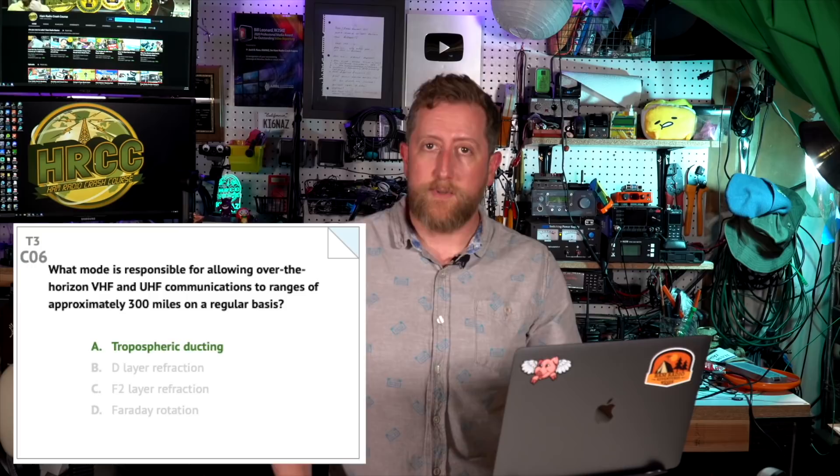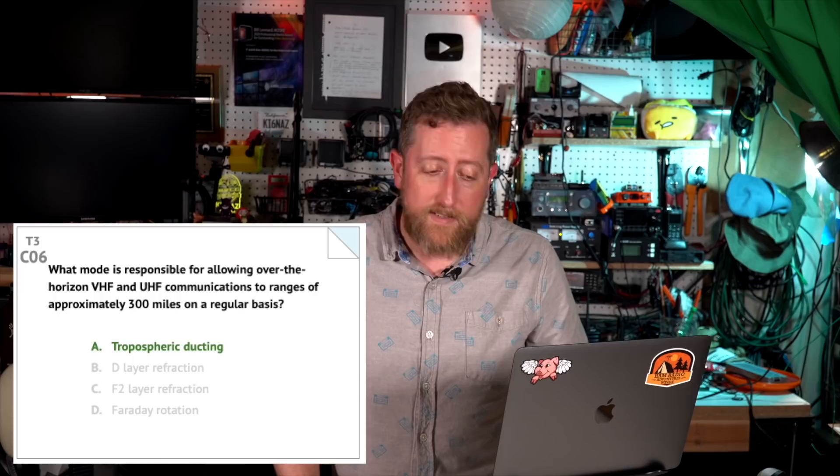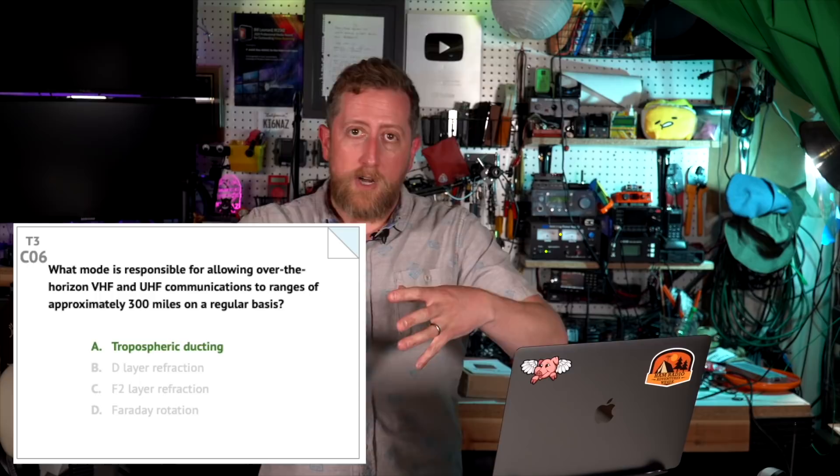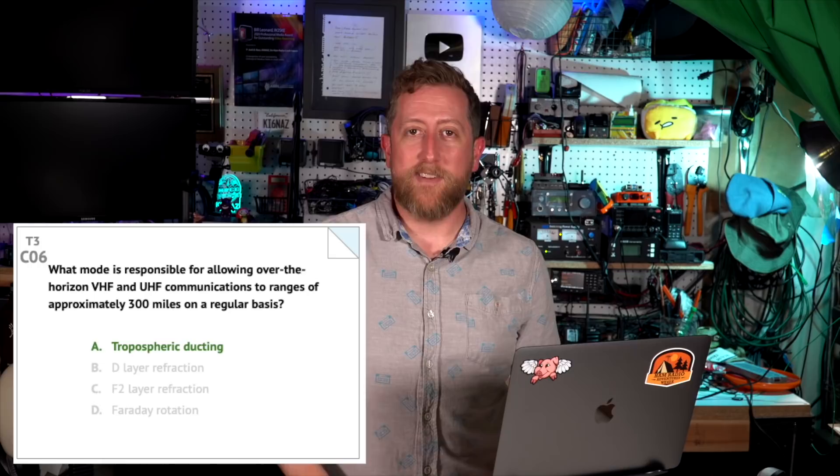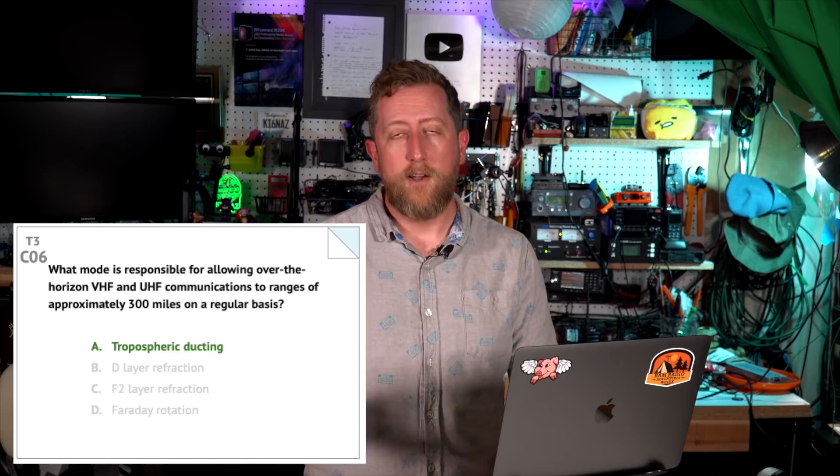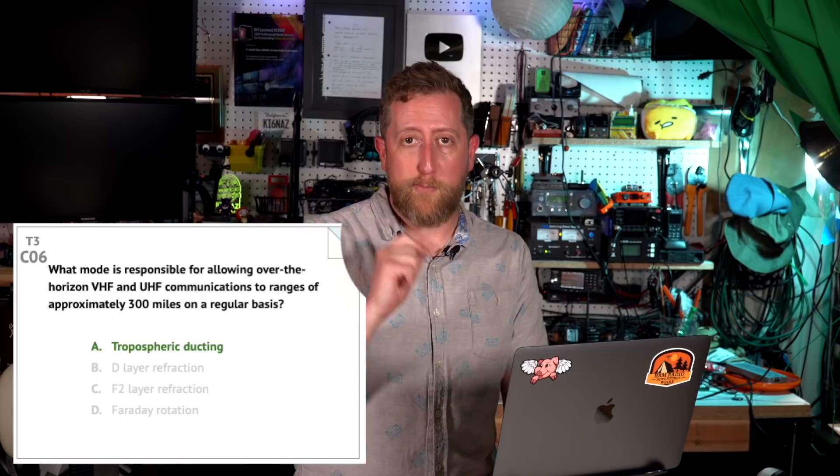T3C06: What mode is responsible for allowing over-the-horizon — beyond line of sight — VHF and UHF communications to ranges of approximately 300 miles on a regular basis? The answer is tropospheric ducting. This is a lower atmospheric condition — not in the ionosphere but in the atmosphere — where you have a pocket of ionized gases that will refract your VHF signals. Gordon West did a fantastic talk on tropospheric ducting on Ham Nation, which I'll link in the description. The range is about 300 miles at maximum.